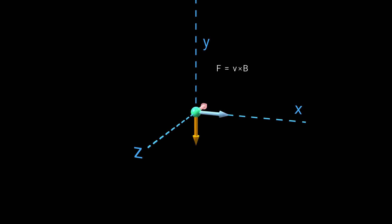For example, if the particle moves to the right, it will be pulled backwards. If it moves forward, it will be pulled to the right. If it moves up, it will experience no force because the cross-product of parallel vectors is zero. If it's close to moving up, it will experience a small force.